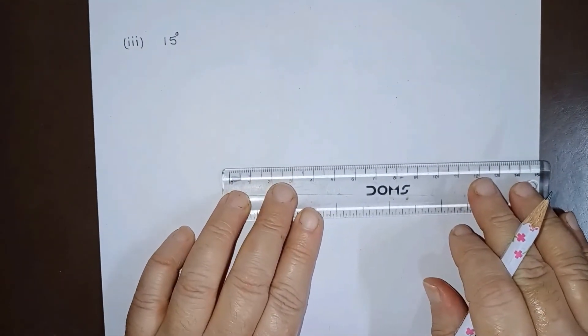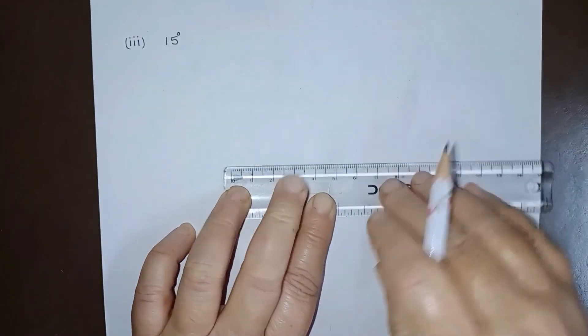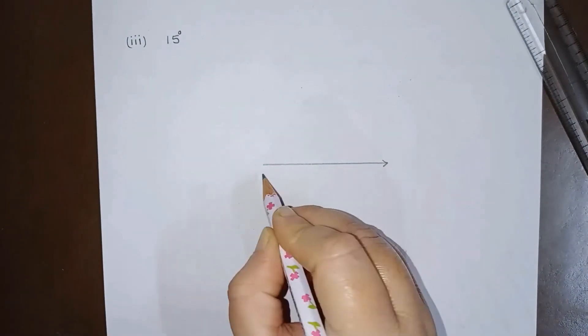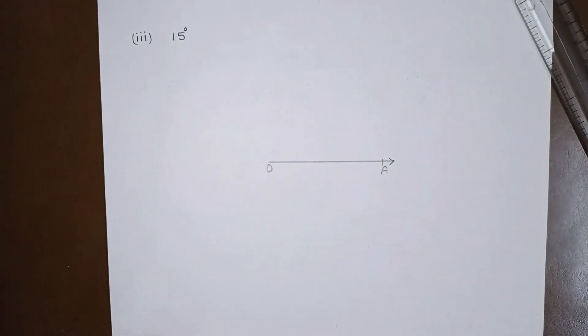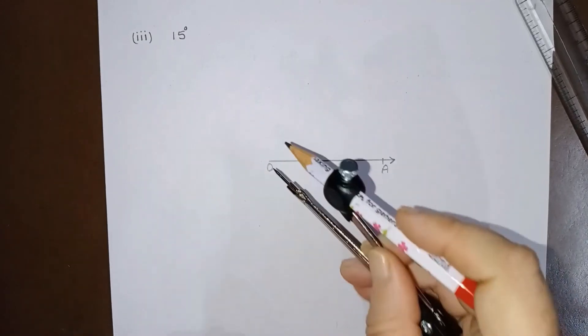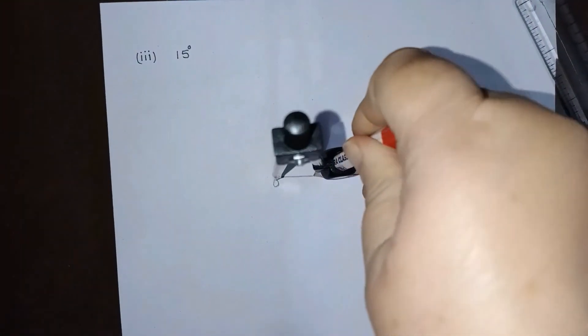Our third part is an angle of 15 degrees. 15 is half of 30 and 30 is half of 60, so we have to first draw an angle of 60 degrees. We will draw a ray OA, and taking O as center with a suitable radius we will draw one arc like this.